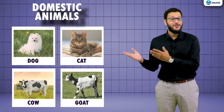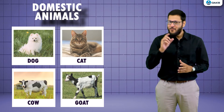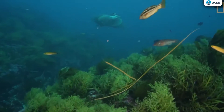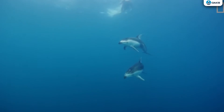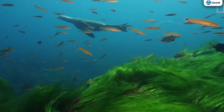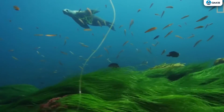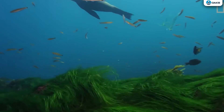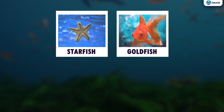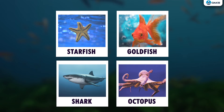Now let us go over there at the large aquarium and look at some water animals. Wow, such a wide variety of fish — they are very beautiful! Can you name some of these animals? They are starfish, goldfish, shark, and octopus.